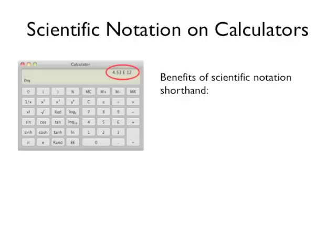Learning the calculator shorthand for entering numbers in scientific notation has several benefits. Entering numbers using this shorthand not only uses fewer keystrokes, it reduces the chance for errors, especially when multiplying or dividing several numbers at once when they are all in scientific notation.